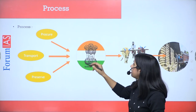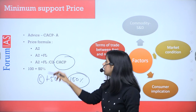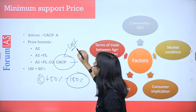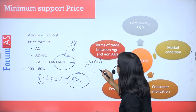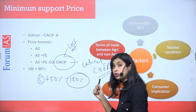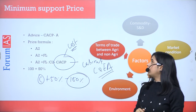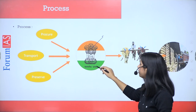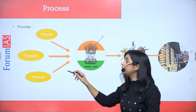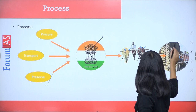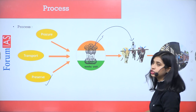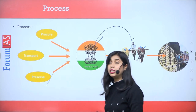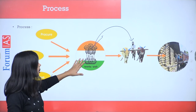MSP is declared by whom? It is calculated by the Commission for Agriculture Cost and Prices, but the final MSP is announced by the Cabinet Committee on Economic Affairs. It is the central government which declares the MSP. After declaring MSP, it is the responsibility of the central government to procure the grain from the farmer, then transport it and preserve it in their godowns — that is FCI godowns. So the central government and farmer have direct interaction in procurement.